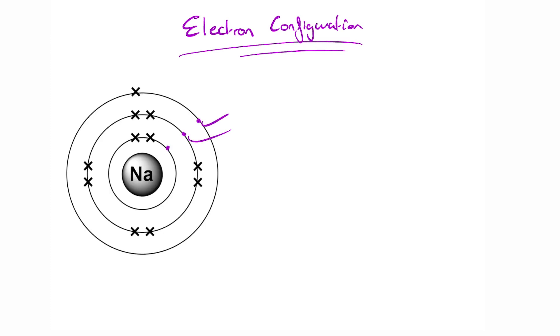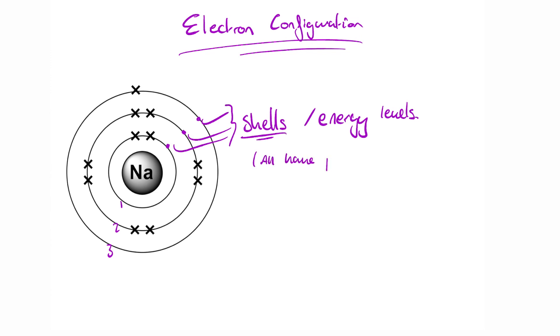Our currently accepted model of the atom states that electrons exist in fixed energy levels or shells. The electrons move around the nucleus in these regions and each shell is given a number. These numbers are the principal quantum numbers. The further away the shell is from the nucleus, the higher the number. 1, 2, 3 and 4. You get the idea.